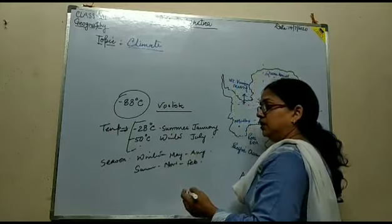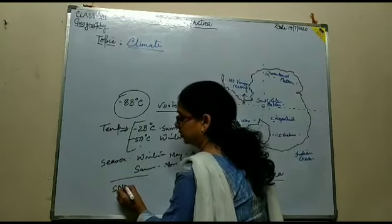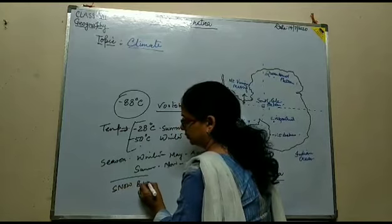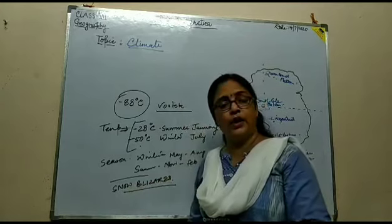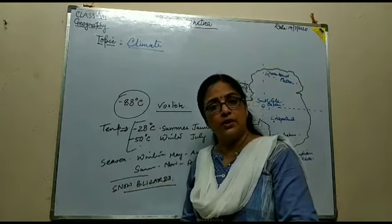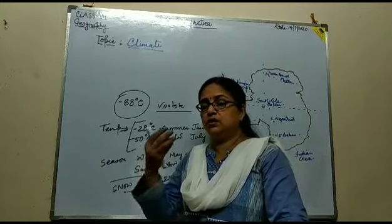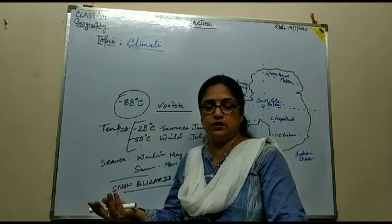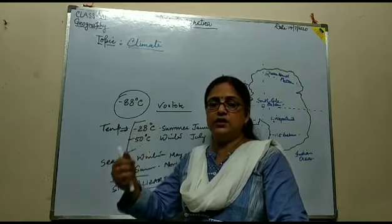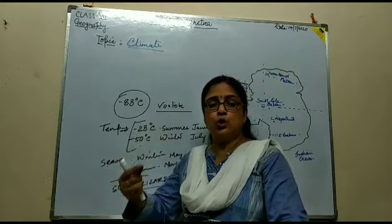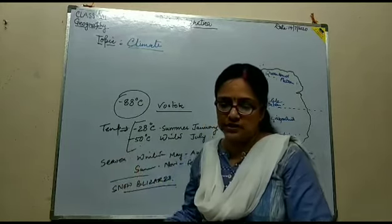The most common weather phenomenon is snow blizzards, which are very common in Antarctica. Blizzards are severe snowstorms with high-speed winds — a very speedy wind combined with heavy snow, which is called a blizzard.